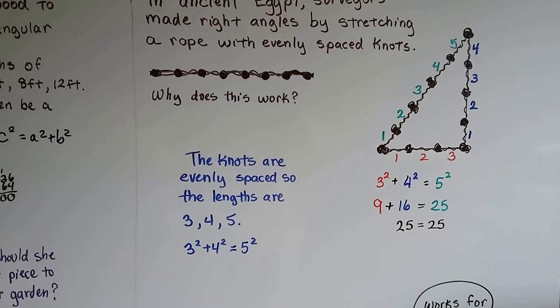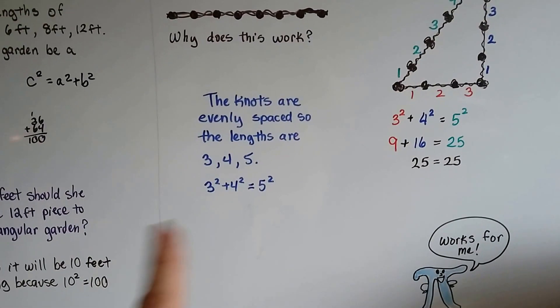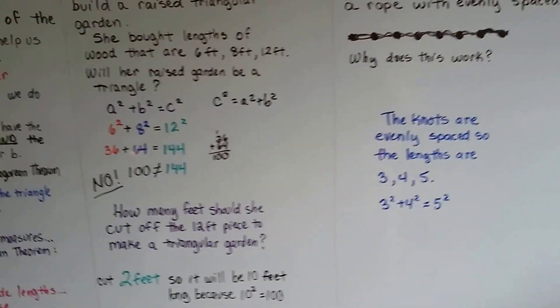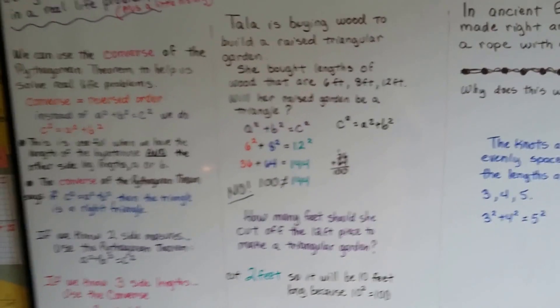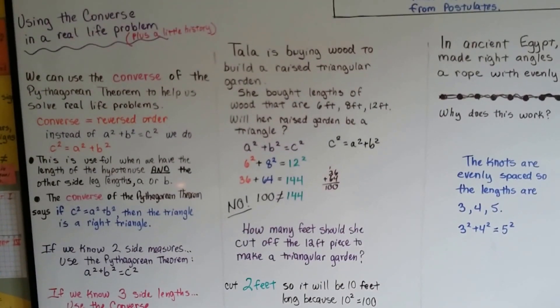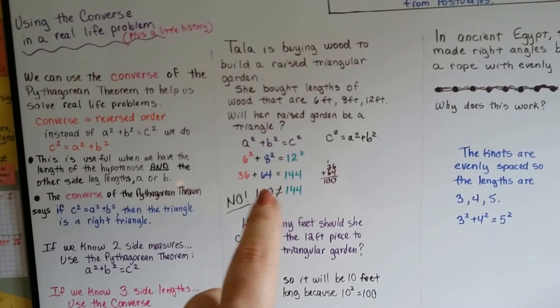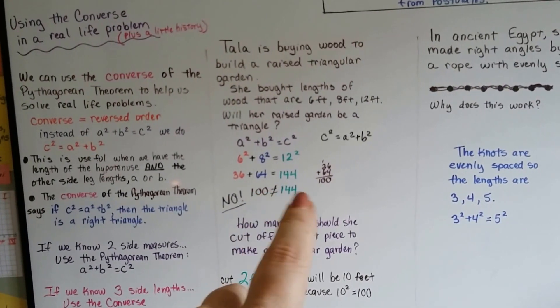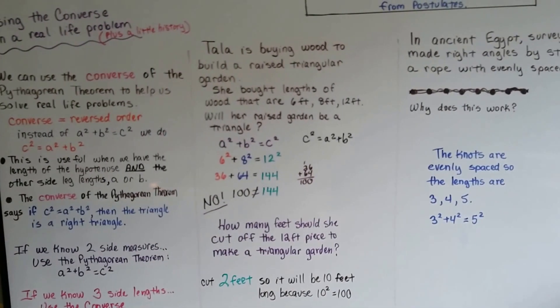It was pretty smart of them, wasn't it? Those ancient Egyptians. So remember that you can use these in a real-life problem, and your final c squared has to be equal, otherwise it's not a right triangle.